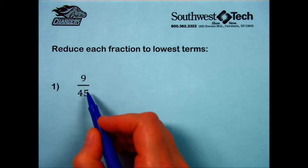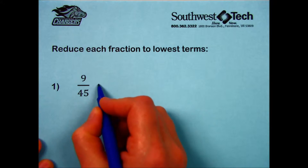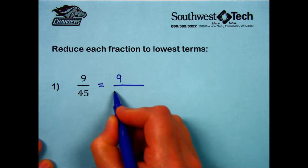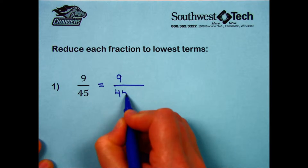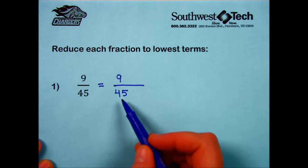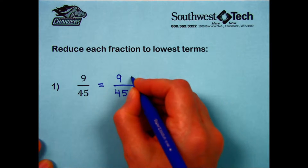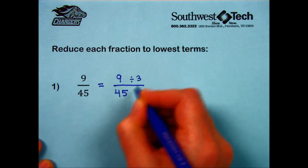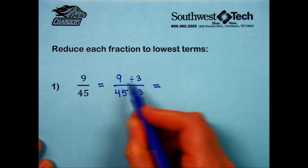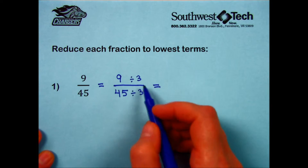Let's try number one together. I write the fraction with a little extra space, and I can see that the numerator and the denominator can each be divided by the same number. They're both divisible by 3. I write it right in the fraction lines like that. Grab a calculator if you need a little help.